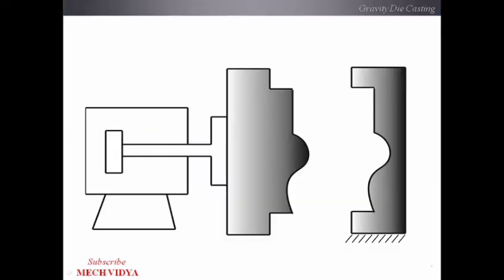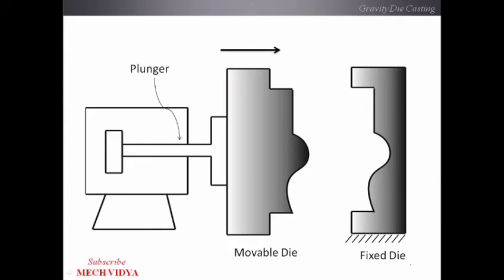Let us understand how a gravity die casting machine looks and what its different components are. In this diagram, on the right-hand side there is a fixed die, and on the left-hand side there is a movable die. This movable die can be moved to and fro in either direction. Just behind the movable die is a component called a plunger, which pushes the movable die towards the fixed die just before we start pouring the molten metal.